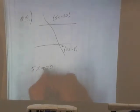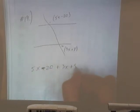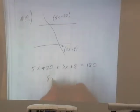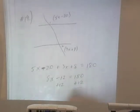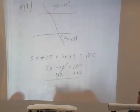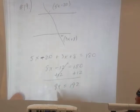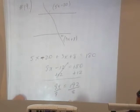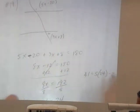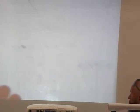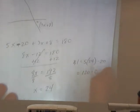So 5X minus 20 plus 3X plus 8 equals 180. Combine some like terms. We have 8X minus 12 equals 180. Add 12 to both sides. I've got 8X equals 192. Divide by 8. X is equal to 24. But I don't want X. I want angle 1. And angle 1 is equal to 5 times 24 minus 20. So 5 times 24 is 120 minus 20. So the measure of angle 1 is equal to 100 degrees.